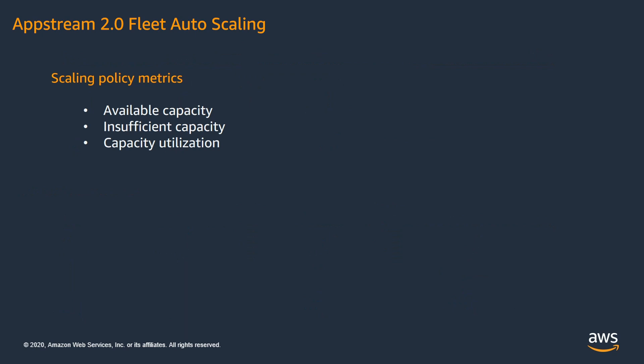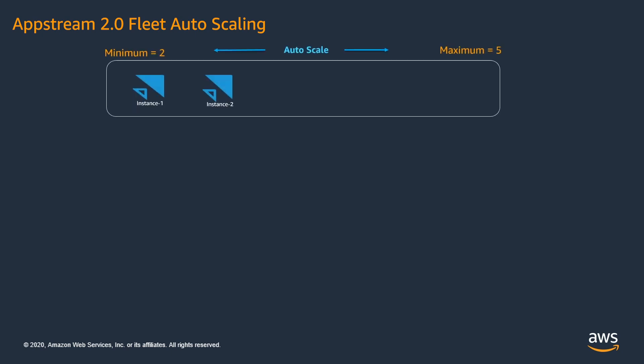For AppStream 2.0, the scaling policies can be configured for different metrics like available capacity, insufficient capacity, or capacity utilization. In this demo, I am going to show you how to scale in and scale out your fleet based on the capacity utilization metric. Let's consider a scenario where we have created a fleet size of minimum 2 and maximum 5 instances. The minimum and maximum values will act as boundaries for the fleet, meaning the fleet size can never fall below 2 instances and can never go beyond 5 instances.